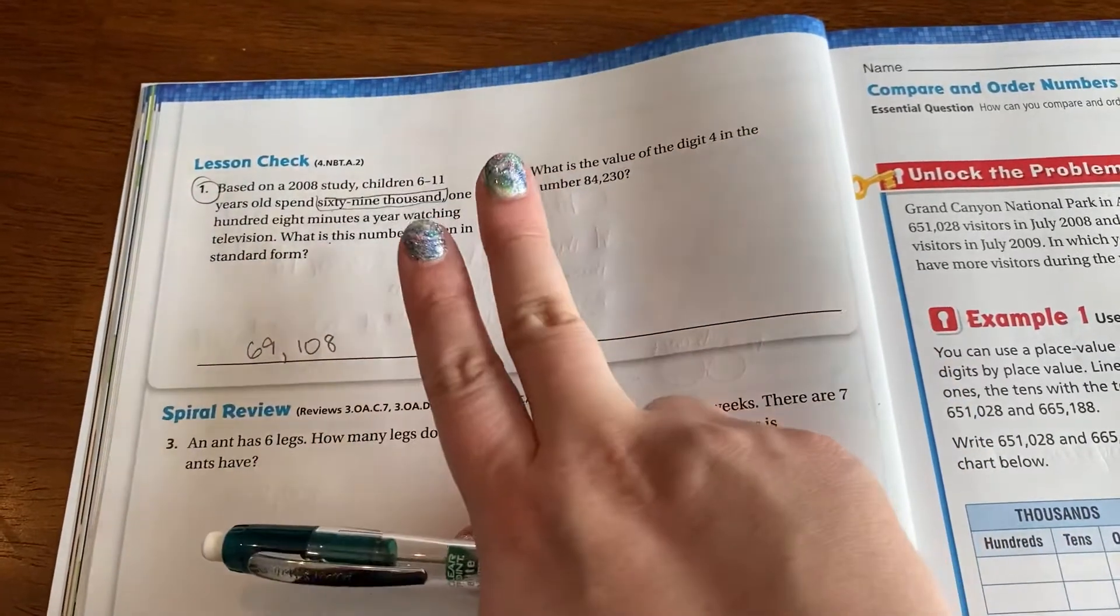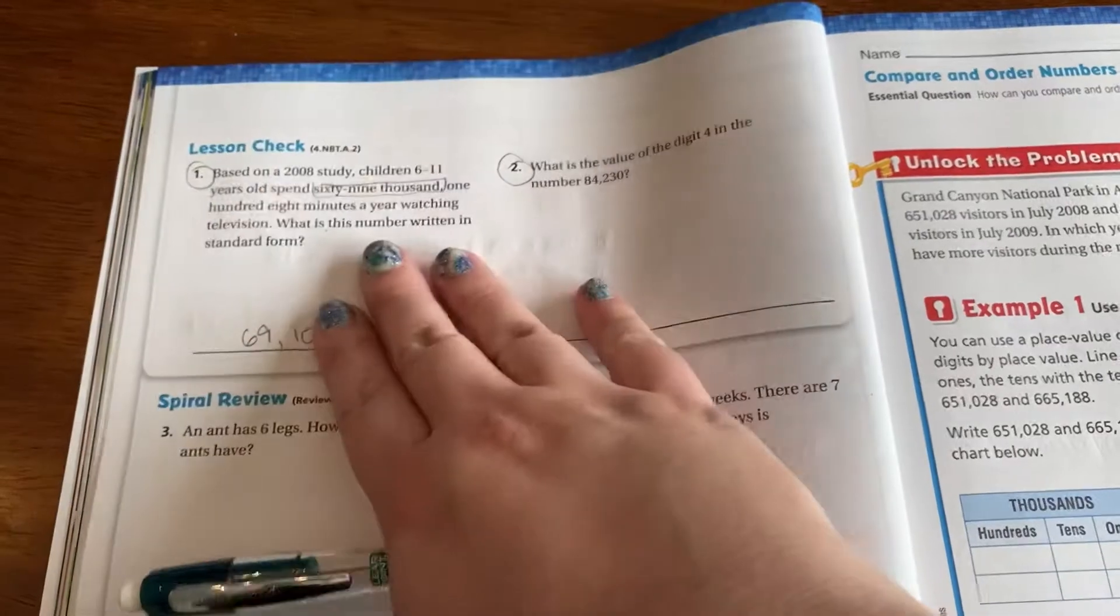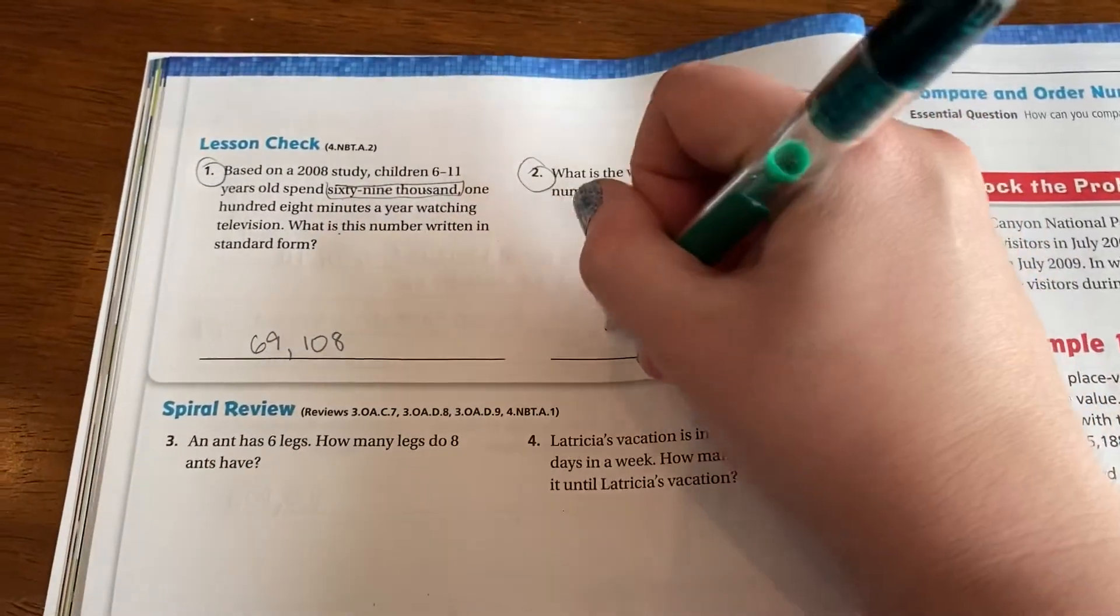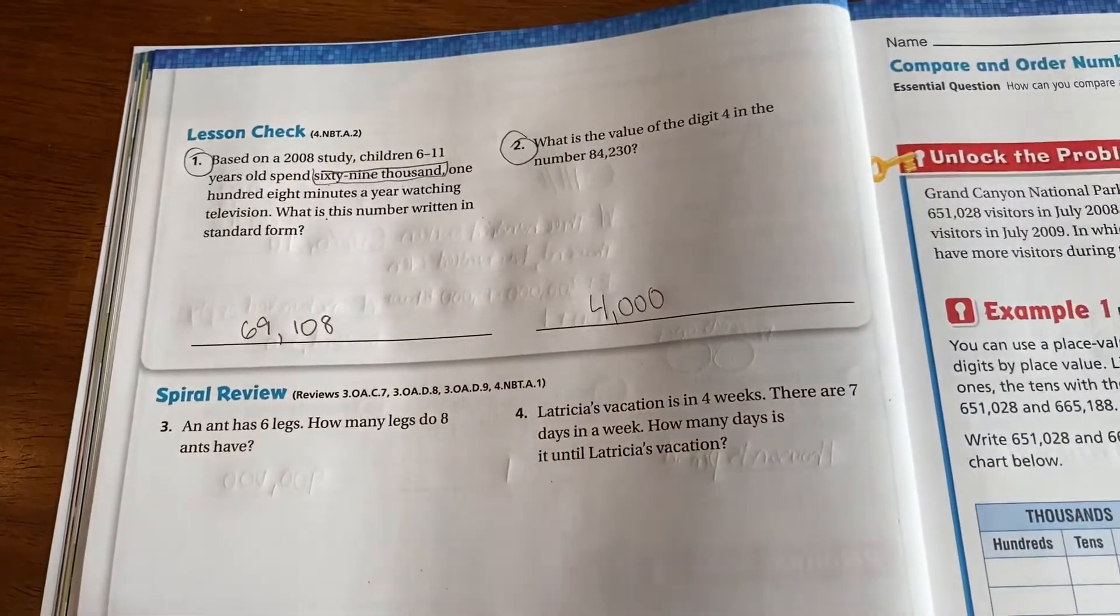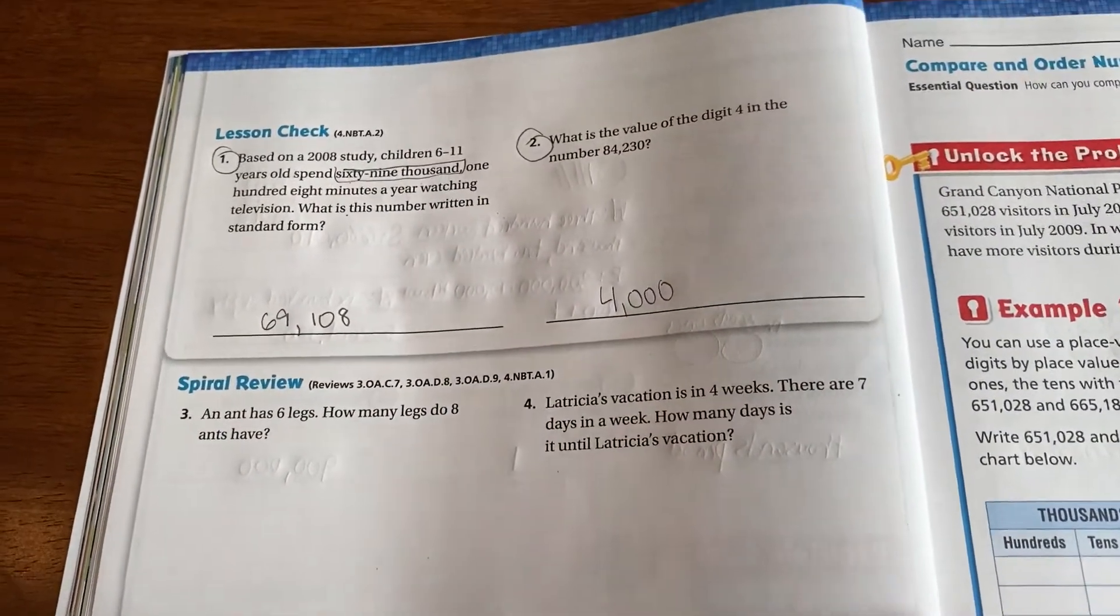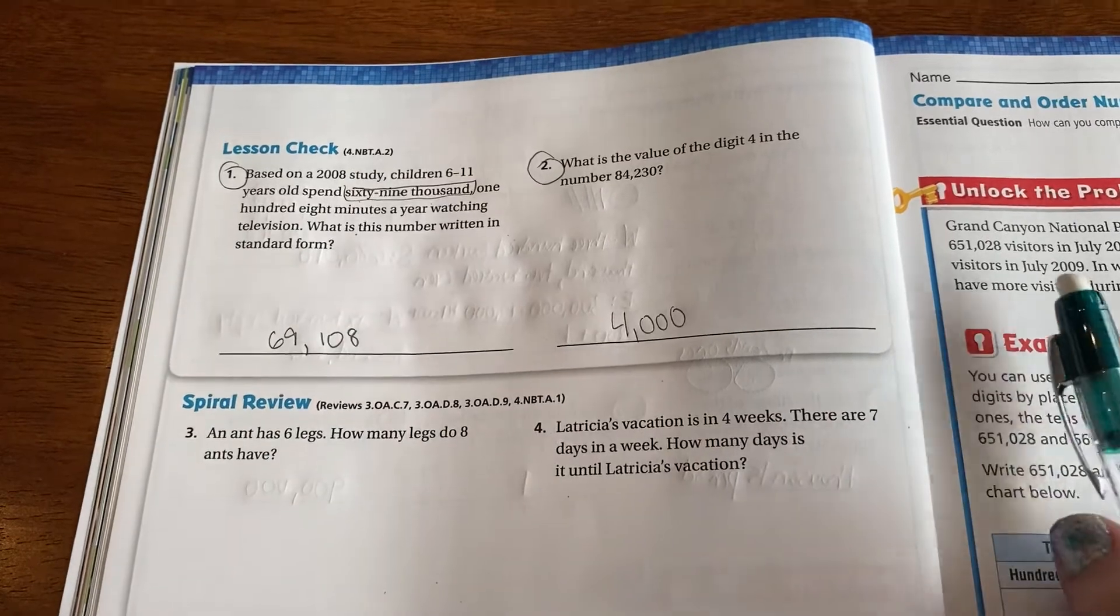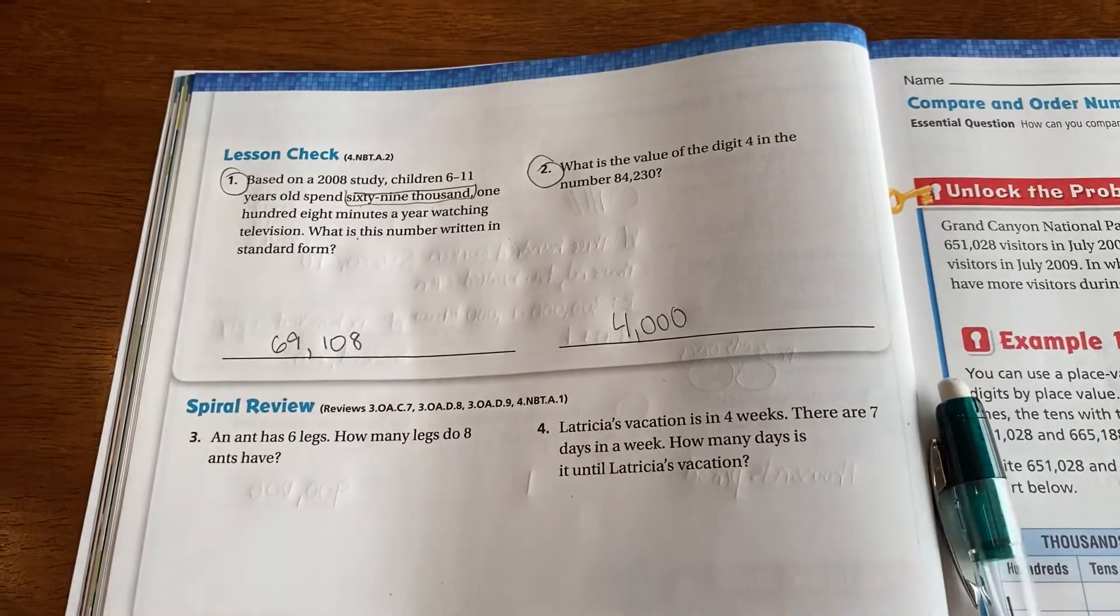And then what is the value of the digit four in the number 84,230? The four is in the one thousands place because we're in the thousands period and we're in the ones place of that period. So that would be four in the thousands place. So that would be 4,000. So the value of the four in the one thousands place is 4,000. You guys still have any questions on this. We'll talk about this in class tomorrow. Save them for then. And I will see you there. Bye.